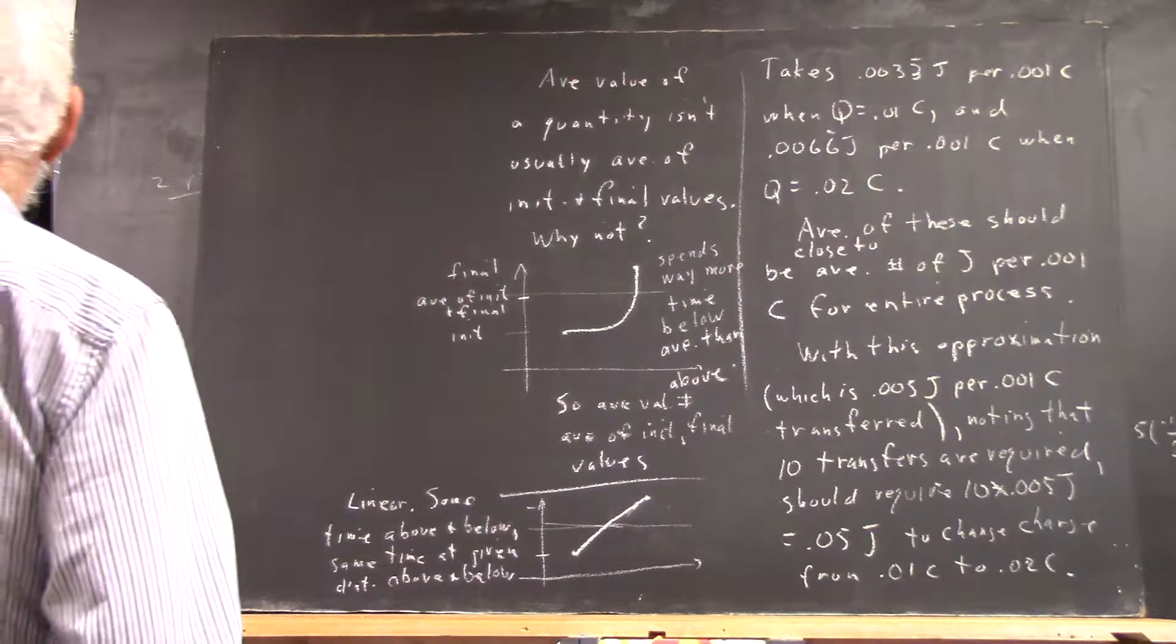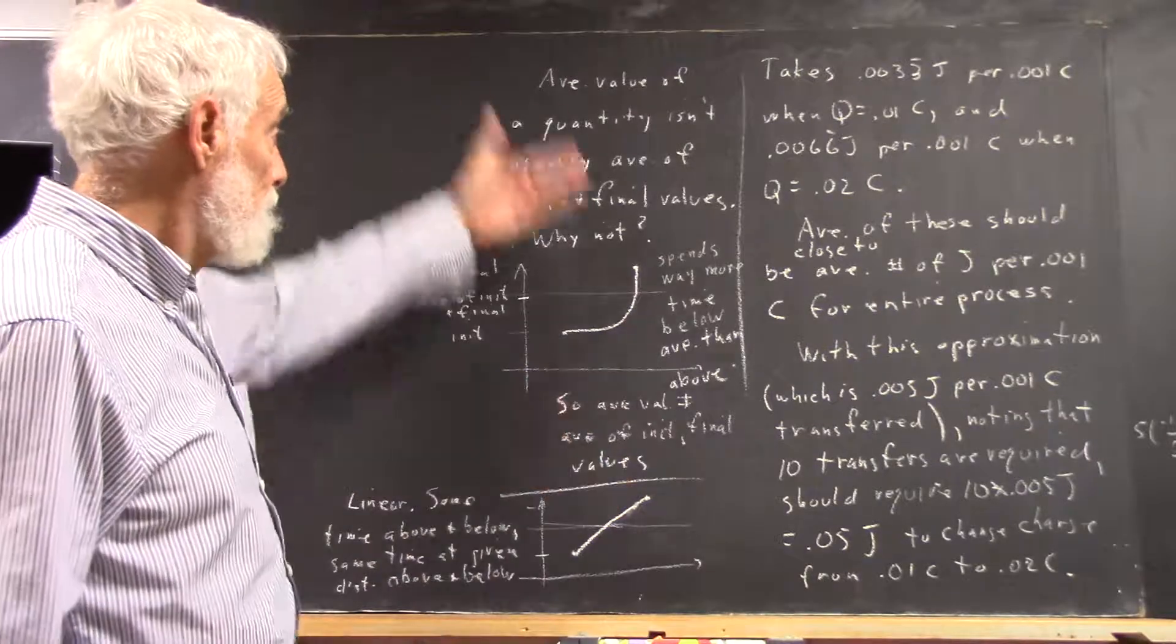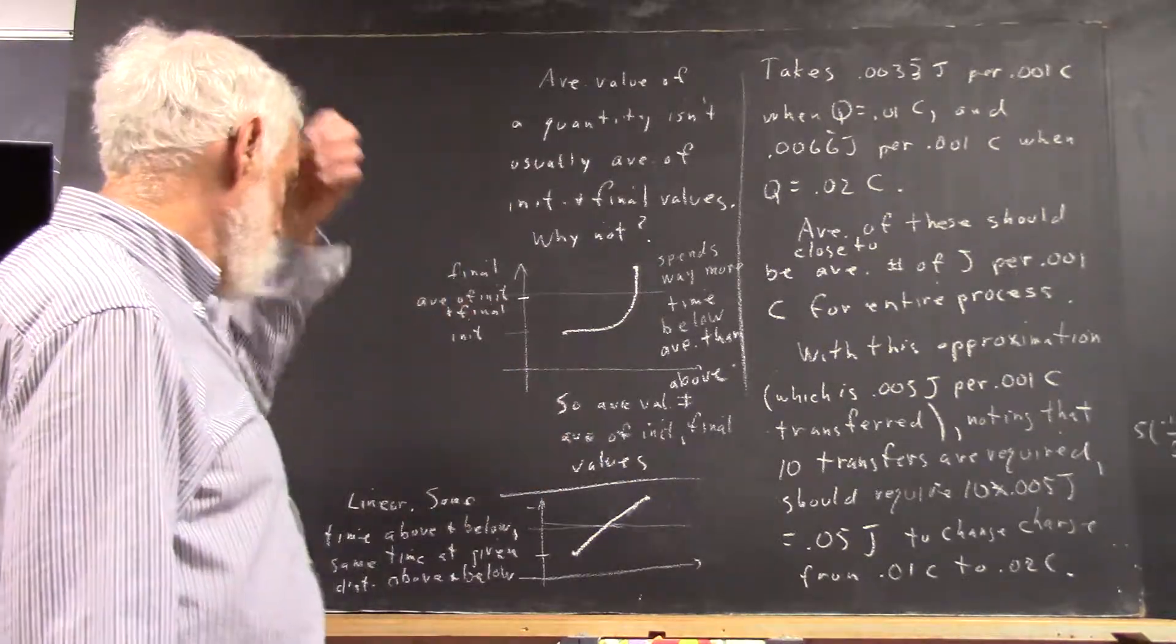Okay, so you've got this graph. You're telling me that this does satisfy the fact, or the condition, that the average value is equal to the average of the initial and final values.